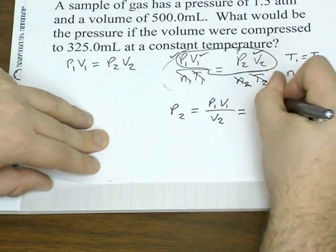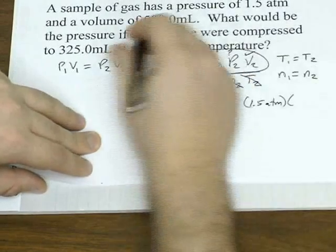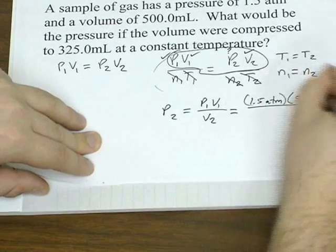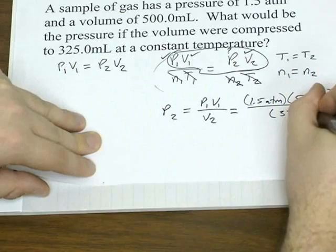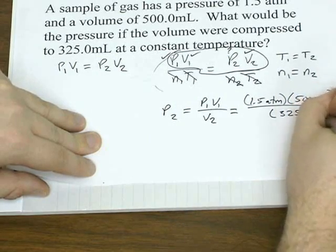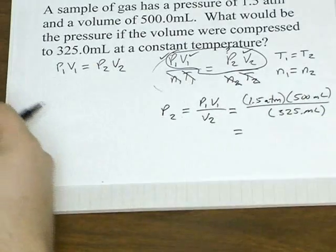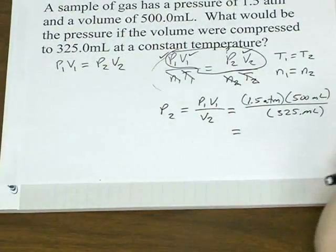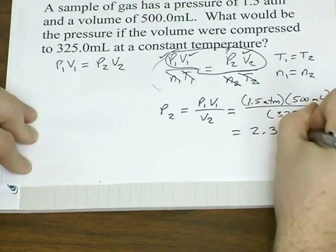So you plug in 1.5 atmospheres, the volume's 500 milliliters, and V2, 325 milliliters. So solving for P2, you get 2.3 atmospheres.